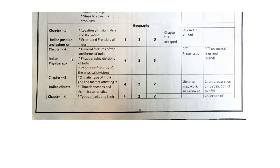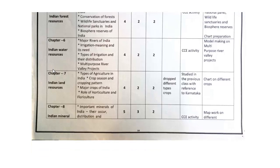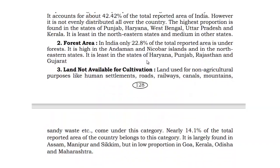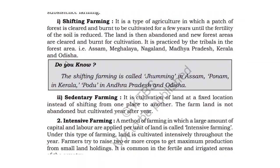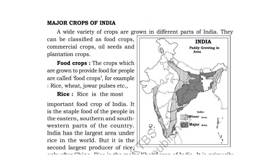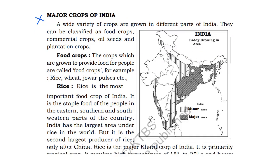In Geography, Chapter 2, 3, 4, 5, and 6 are all remaining the same — there is no change in these chapters. Coming to Chapter 7, 'Indian Land and Resources,' the topic 'Different Types of Crops' has been deleted. Let us mark this in the textbook. This topic has been deleted for you.